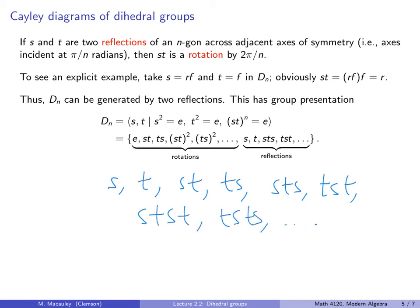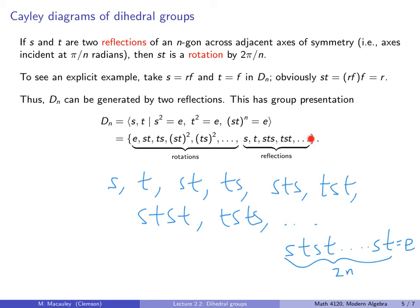So things in D_N look like S, T, S, T, S, T, S, T, S, and so forth, all the way up to a word of length 2N, which is the identity because (ST)^N is the identity. All of these end up being distinct elements. Moreover, the ones that have an even number of letters are actually rotations, and the ones that have an odd number of S's and T's are reflections.